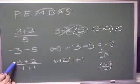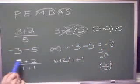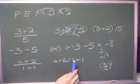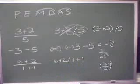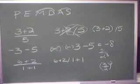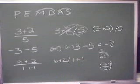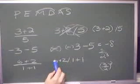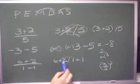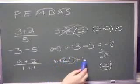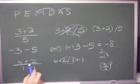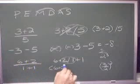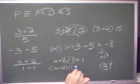Looking at this next problem, again the same issue with order of operations. If you simply type in 6 plus 2 divided by 1 plus 1, think for a second — the calculator is going to take 6, add it to 2 divided by 1, and then add 1 to that answer. That's not what you want, so again use parentheses: 6 plus 2, divided by parentheses 1 plus 1.